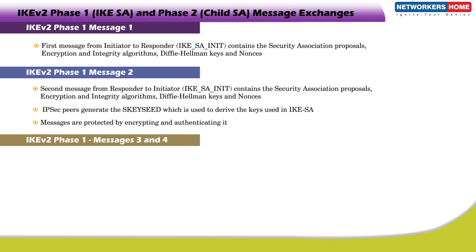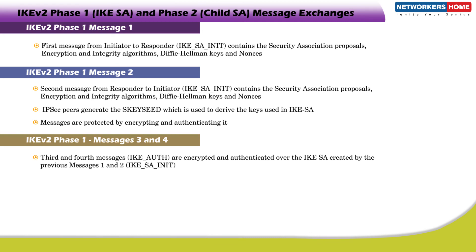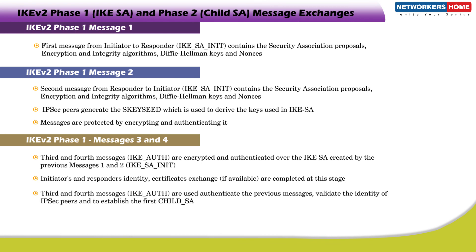IKE V2 Phase 1 Messages 3 and 4: The third and fourth messages are encrypted and authenticated over the IKE SA created by the previous messages 1 and 2. These two messages are for authentication — the initiator's and responder's identity and certificate exchanges are completed at this stage. The third and fourth messages are used to authenticate the previous messages, validate the identity of IPsec peers, and to establish the first Child SA. At the end of messages 3 and 4, the IPsec peers are verified and the first Child SA is established.